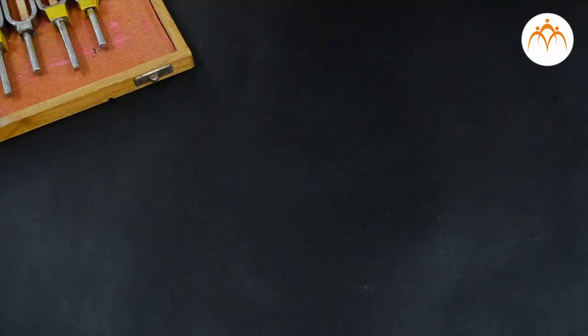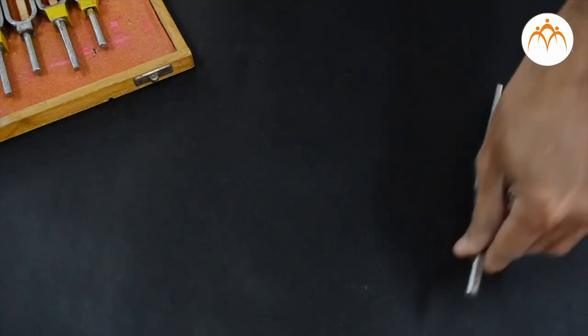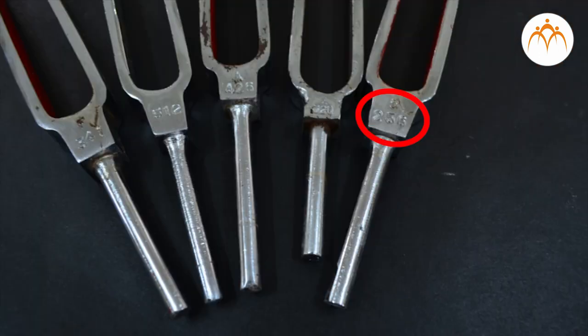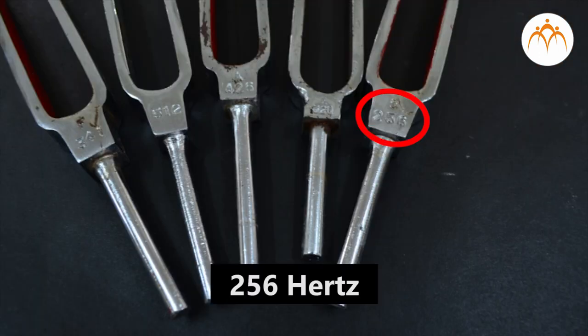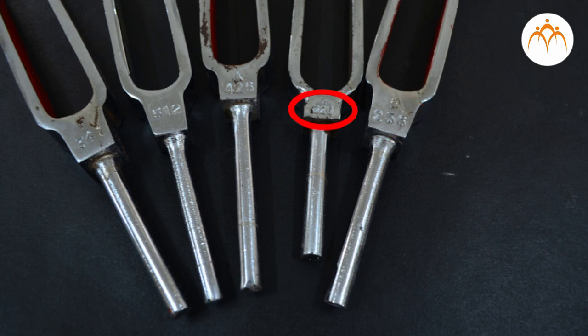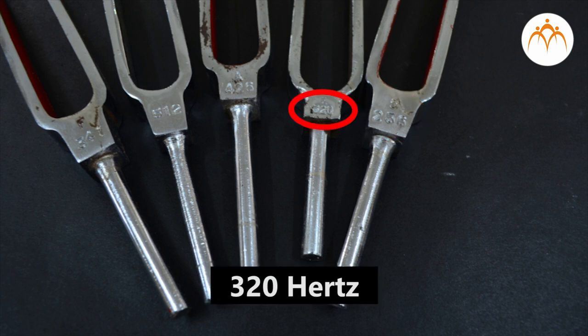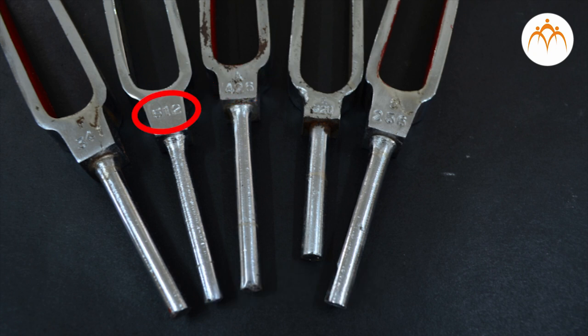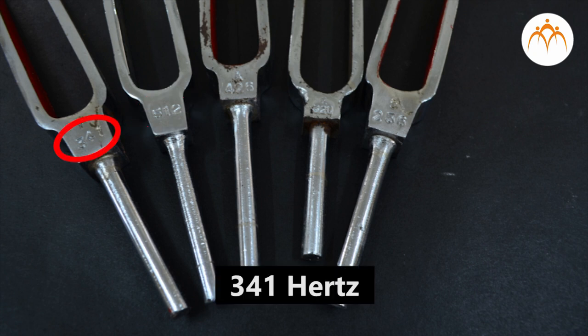These tuning forks have different numbers written on them. This one is 256 hertz. This one is 320 hertz. This one is 426 hertz. This one is 512 hertz. This one is 341 hertz.